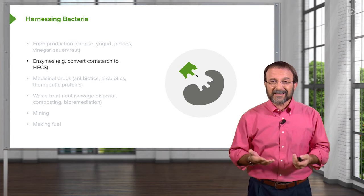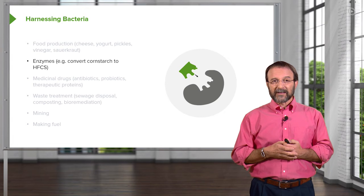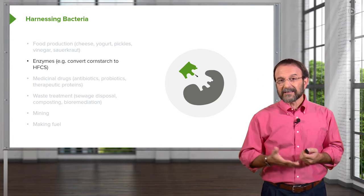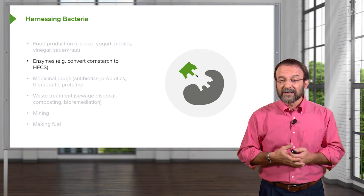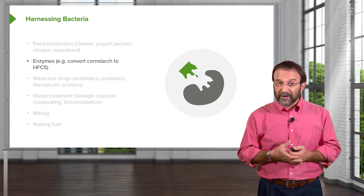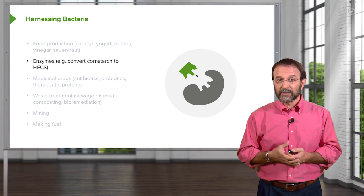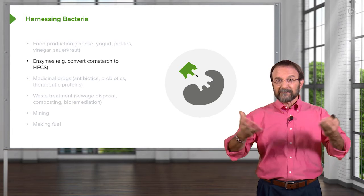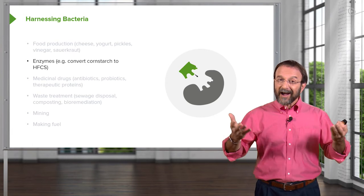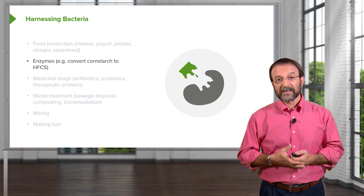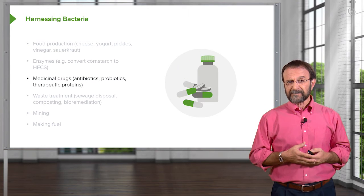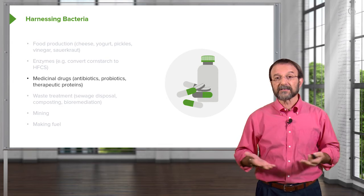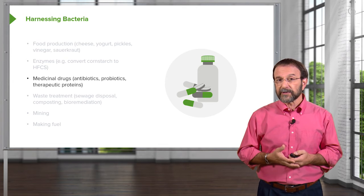We use enzymes from bacteria to produce so many things. For example, enzymes from bacteria are used to convert corn starch to high fructose corn syrup — the component of all those sodas that everyone seems to love. High fructose corn syrup is made with a bacterial enzyme. We use bacteria to make a variety of medicinal products like antibiotics, probiotics, and therapeutic proteins.